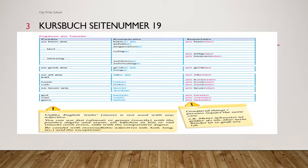Teuer: zo teuer wie, teurer als — understand the spelling: T-E-U-E-R is teuer but comparative is T-E-U-R-E-R, am teuersten. Dunkel follows the same rule as teuer (already seen in that video): zo dunkel wie, dunkler als, am dunkelsten. While making the superlative form it returns to normal spelling.